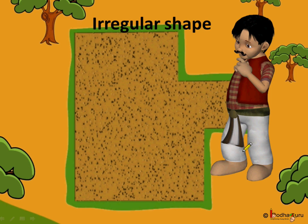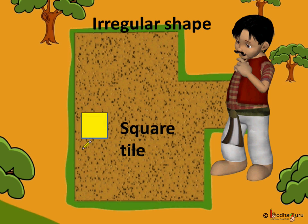This is Mahnath Ram. He saw this plot and said: what kind of shape is this, and how to know its area? We don't need to worry. We just need to fill the area with square tiles. So this is the square tile, and we'll use it to fill the area of this land and find out how many total tiles were used.